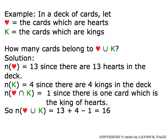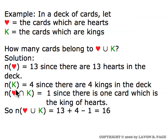The two sets of cards we're going to be thinking about in this example are the hearts and the kings. We'll denote the hearts in the deck simply by a red heart symbol, and we'll denote the kings by the green letter K. How many cards belong to the union of these two sets? Well, there are thirteen hearts in the deck, so N of that set is thirteen. The number of kings is four — the king of clubs, of diamonds, of hearts, and of spades. How many cards are in the overlap of these two sets — both a heart and a king? There's only one: it's the king of hearts, so the number of elements in the intersection is one.